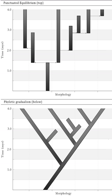In 1972, paleontologists Niles Eldredge and Stephen Jay Gould published a landmark paper developing their theory and called it punctuated equilibria. Their paper built upon Ernst Mayr's model of geographic speciation, I. Michael Lerner's theories of developmental and genetic homeostasis, and their own empirical research. Eldredge and Gould proposed that the degree of gradualism commonly attributed to Charles Darwin is virtually non-existent in the fossil record, and that stasis dominates the history of most fossil species.